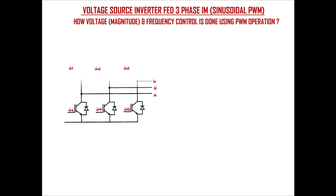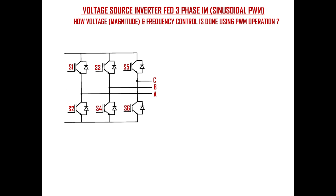First, let's consider a three-phase voltage source inverter consisting of six IGBT switches as shown here, which will be connected to a three-phase induction motor. For simplicity I have not shown the induction motor here. The inverter can also be made up of six thyristor switches, but keep in mind that if you are using thyristor switches then you need to have a separate commutation circuit to turn off the thyristors — that is, to reverse bias the thyristors.